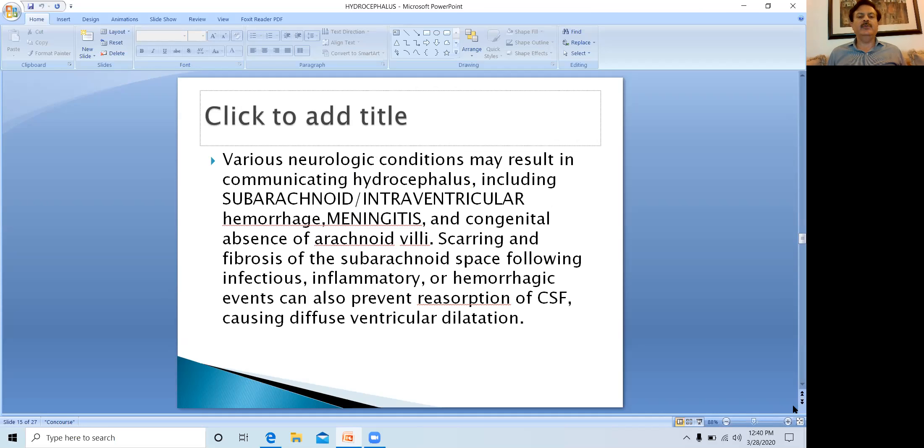Various neurological conditions may result in communicating hydrocephalus, and the most important is subarachnoid hemorrhage or intraventricular hemorrhage, then meningitis, encephalitis, and congenital absence of arachnoid villi. Scarring and fibrosis of the subarachnoid space following infections, inflammatory or hemorrhagic events can also prevent reabsorption of CSF, causing diffuse ventricular dilatation.